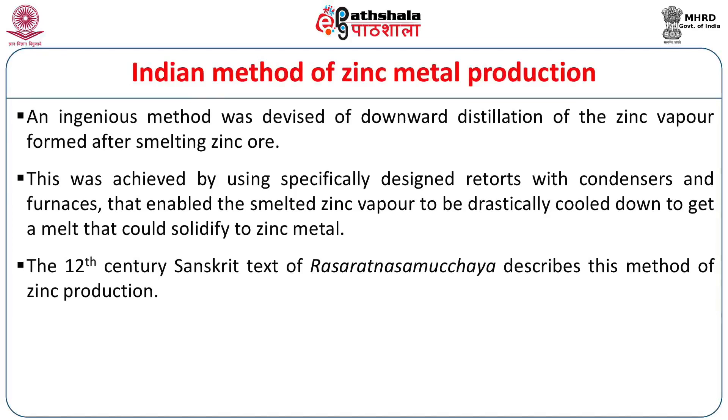It is also very interesting that the 12th-century Sanskrit text, the Rasaratnasamuchaya, describes this method of zinc production. At Zawar you can still see the remains of the koshti furnaces with the retorts, which the Rasaratnasamuchaya describes as being aubergine-shaped. The condensers have a stem and a portion in which the ore is packed, then downward distillation into the bottom of the furnace takes place. The furnace is heated on top above a perforated grill, through which the retort descends to the bottom. It is a very ingenious furnace design which brought about this efficient process of downward distillation of zinc vapor — rasa here refers to the zinc vapor.